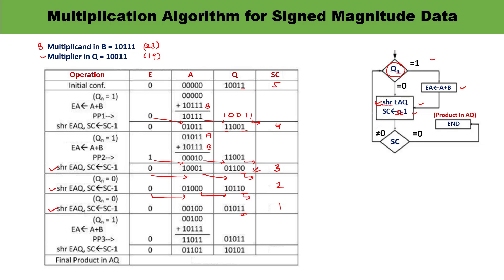We check QN — it is 1. So we have to add B into A. This is A and this is B. Adding B into A gives the result. We perform a shift right: the 1 comes to its place, the outgoing 1 is removed, and 0 comes to its position. The sequence counter is decremented by 1, reaching 0. This is the end of the program, and the result is stored in register AQ.